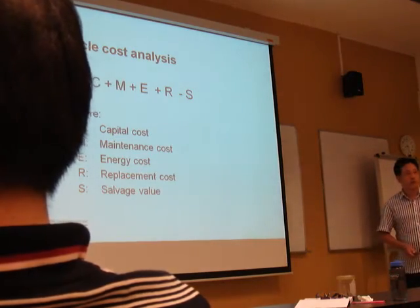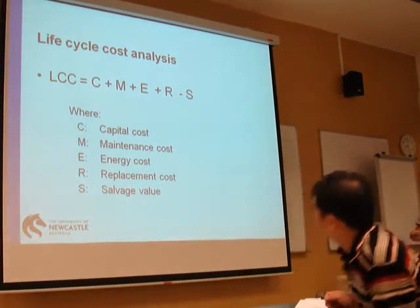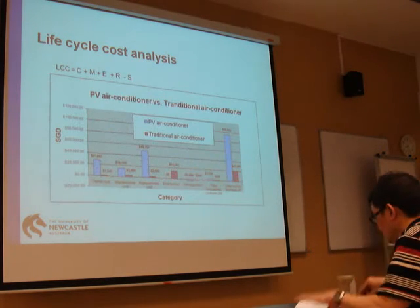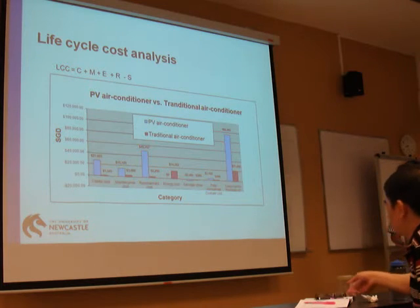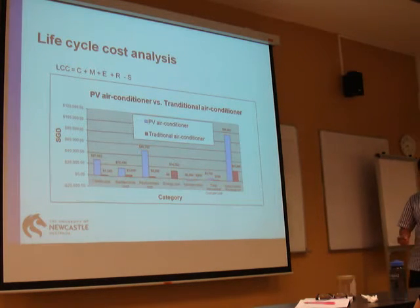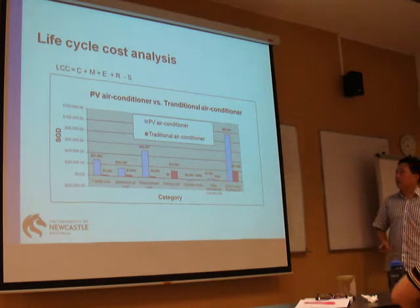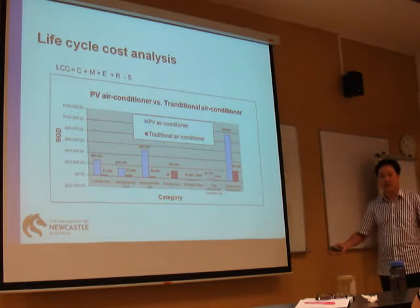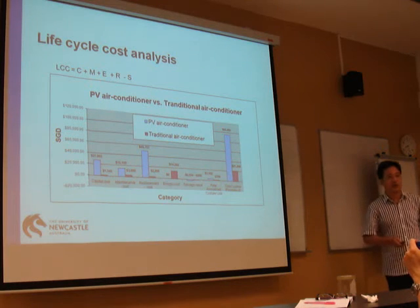We got quotations from the suppliers, so now we are ready to calculate the life cycle cost for this system. We use a standard formula for costing and calculated the solar air conditioner over a 30-year lifespan. We also calculated a similar capacity air conditioner powered by the grid. Although the solar air conditioner has $0 energy cost over 30 years, the total cost is much more expensive than the traditional grid-powered air conditioner.